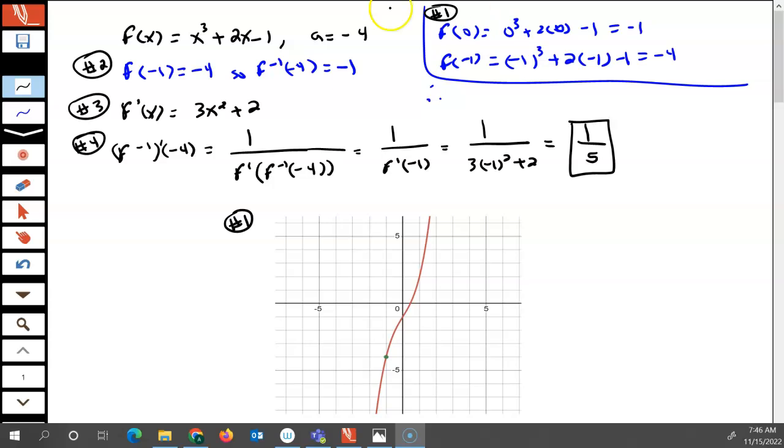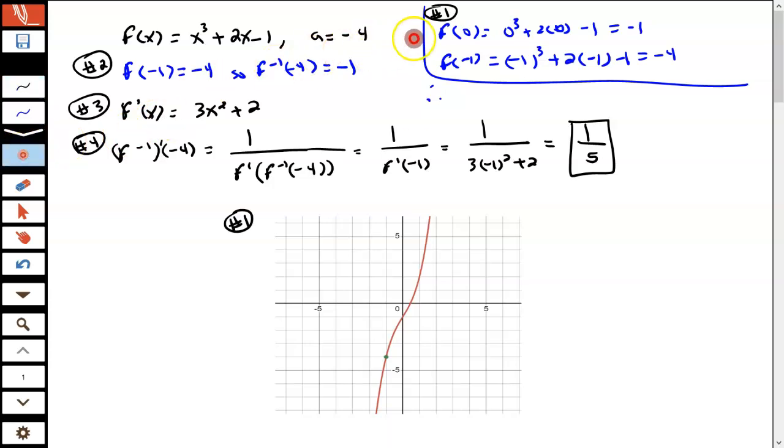You could do that one of two ways. You could come over here like I did up top and plug in some numbers to see if you can find the value. So I started off with f equals 0 and plugged that in. That resulted in the function equaling negative 1. Then I substituted in negative 1 and worked that out, and that resulted in the function equaling negative 4. So when x is negative 1, the value of the function is negative 4. That's what I was looking for.